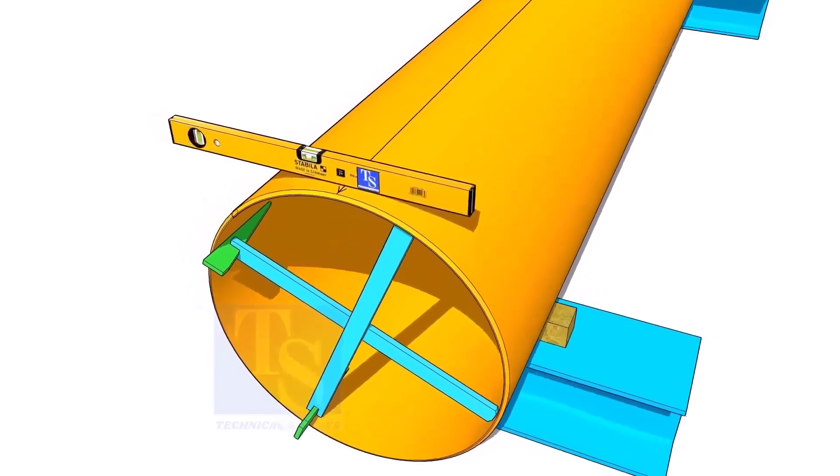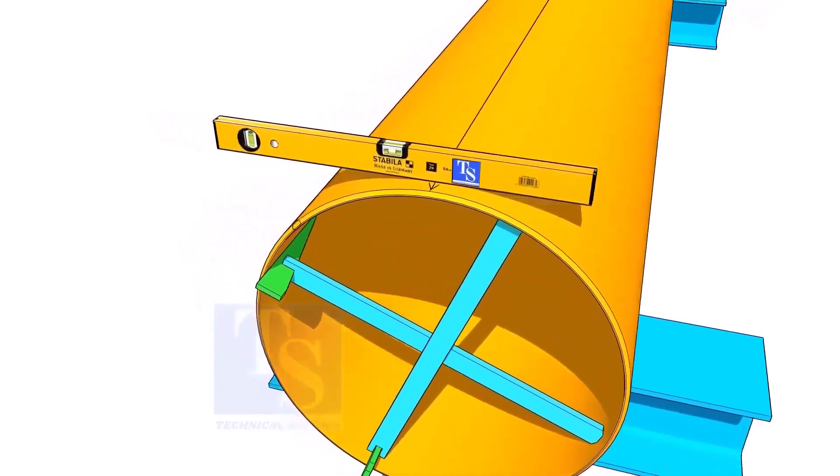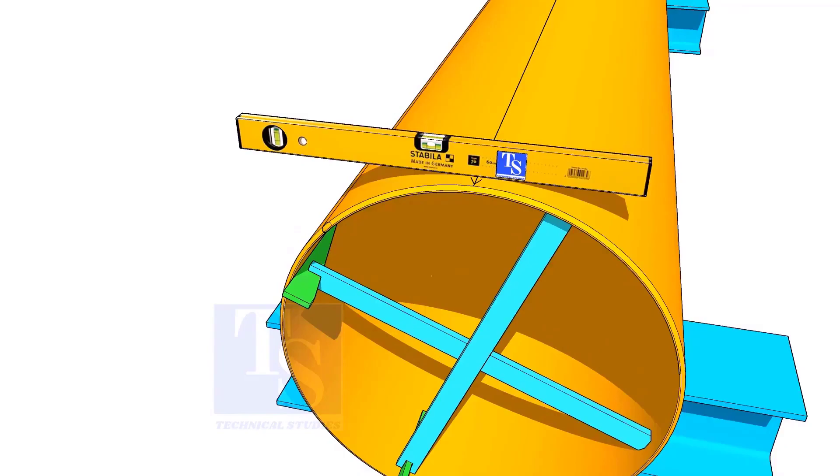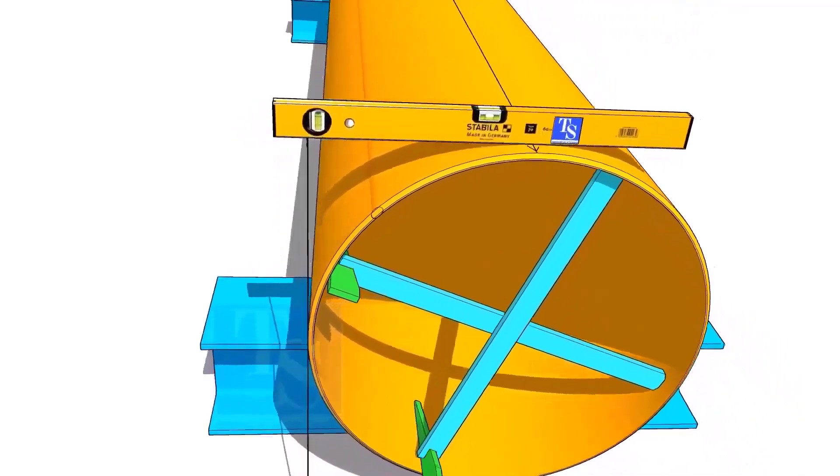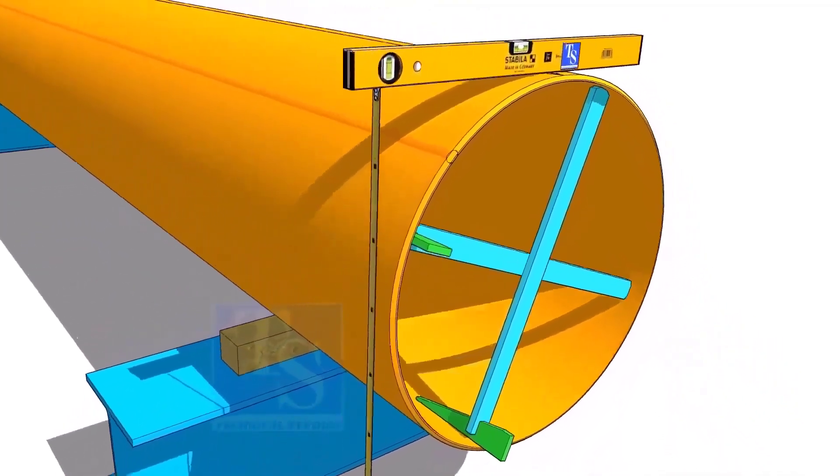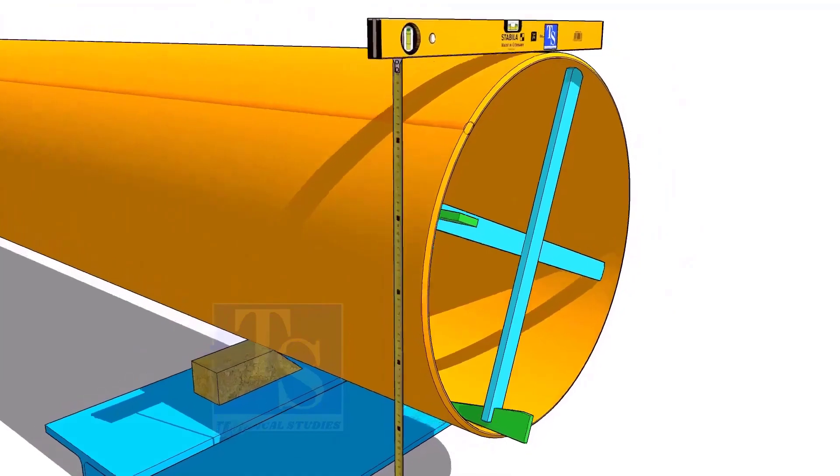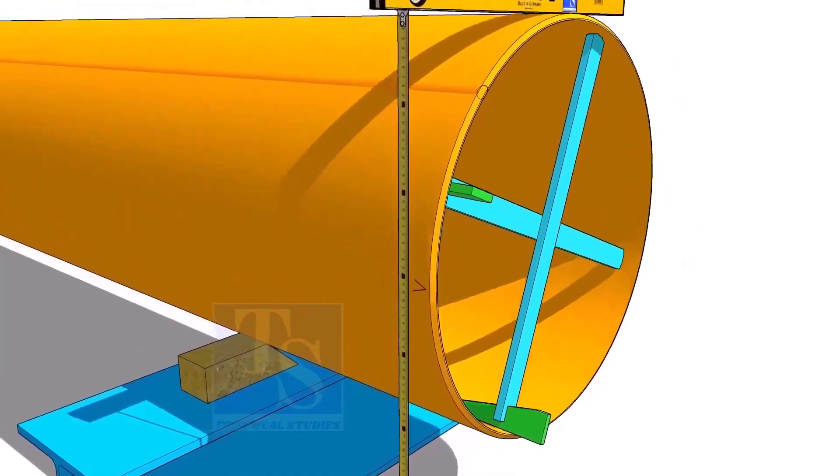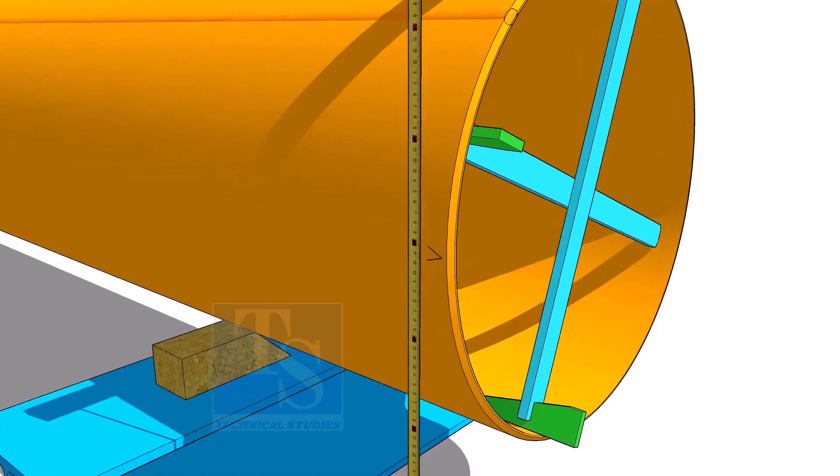Another method to mark the center line is to hold the level bottle horizontal and mark half OD on the side of the pipe. The advantage of this method is you can mark two opposite center lines at the same time.